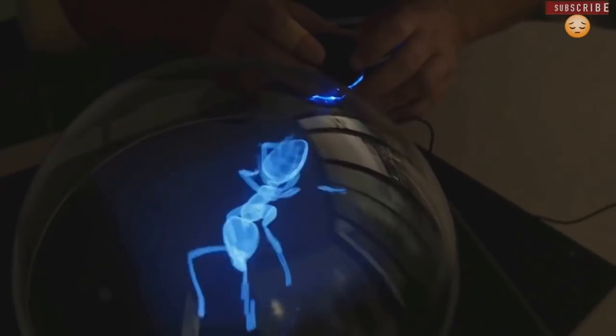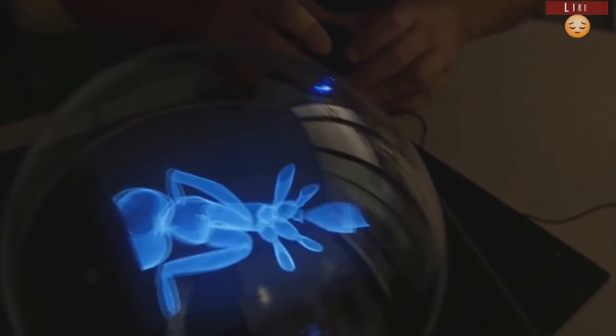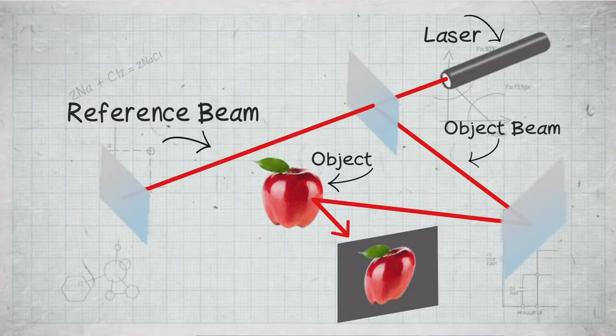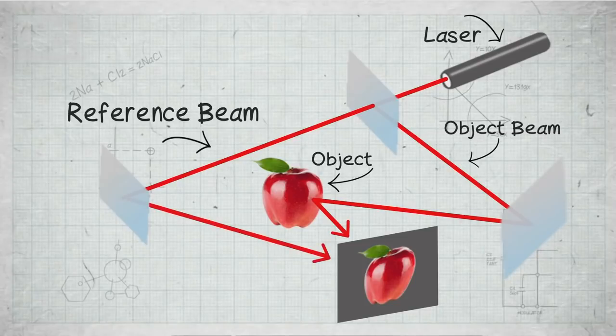Michael Talbot wrote, a hologram is produced when a single laser light is split into two separate beams. The first beam is bounced off the object to be photographed. Then the second beam is allowed to collide with the reflected light of the first. When this happens, they create an interference pattern, which is then recorded on a piece of film. As soon as another laser beam is shined through the film, a three-dimensional image of the original object reappears.